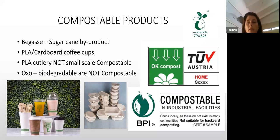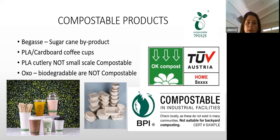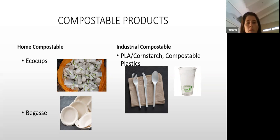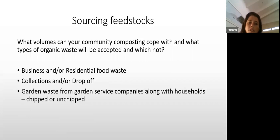These products should all be certified compostable and labeled with a conformity logo — there's a seedling logo with a registration number that can be checked against a database to confirm correct certification. TÜV in Austria runs the database in Europe, and BPI is the one in America. It should also stipulate whether it's home compostable or industrial. For example, eco cups and bagasse products are home compostable, whereas thicker PLA products require an industrial composting facility.